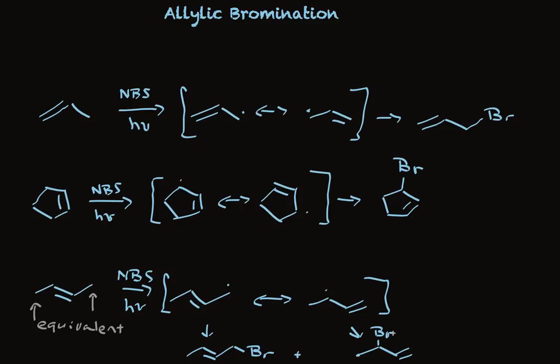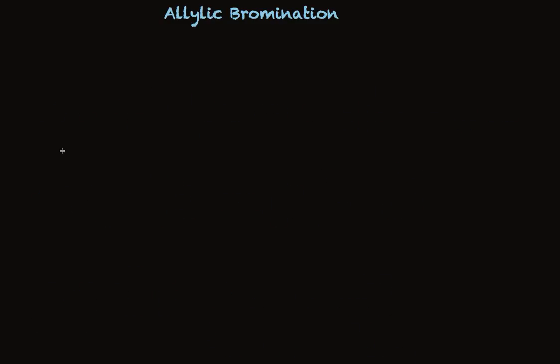So the take-home message is that allylic bromination occurs selectively at the carbons attached to the carbon-carbon double bond of an alkene, that this is synthetically useful pretty much only when the resonant-stabilized radical intermediate has two equivalent resonant structures, so they form the same product. And finally,